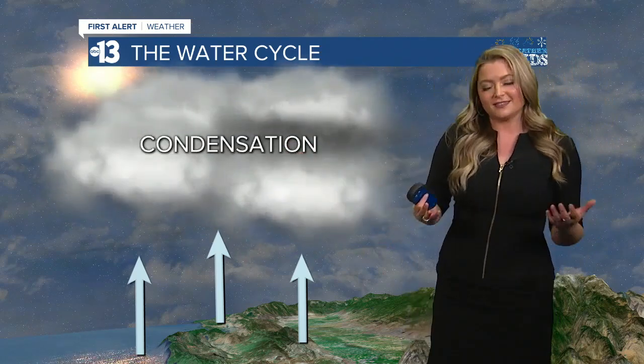The water turns back into liquid form, and what we see is clouds. Clouds drift across the globe, steered by air currents. Once enough condensation collects and the cloud gets packed with moisture, it releases the water as precipitation.